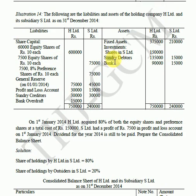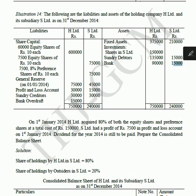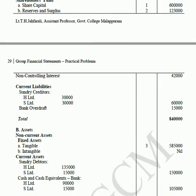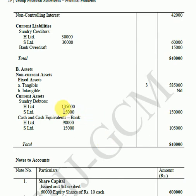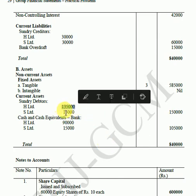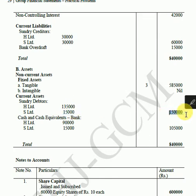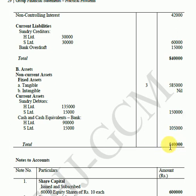Current assets include sundry debtors: H Limited Rs.1,35,000 plus S Limited Rs.15,000 equals Rs.1,50,000. Cash and cash equivalents: H Limited Rs.90,000 plus S Limited Rs.15,000 equals Rs.1,05,000. The total of Section B of the consolidated balance sheet is also Rs.8,40,000. Thank you.